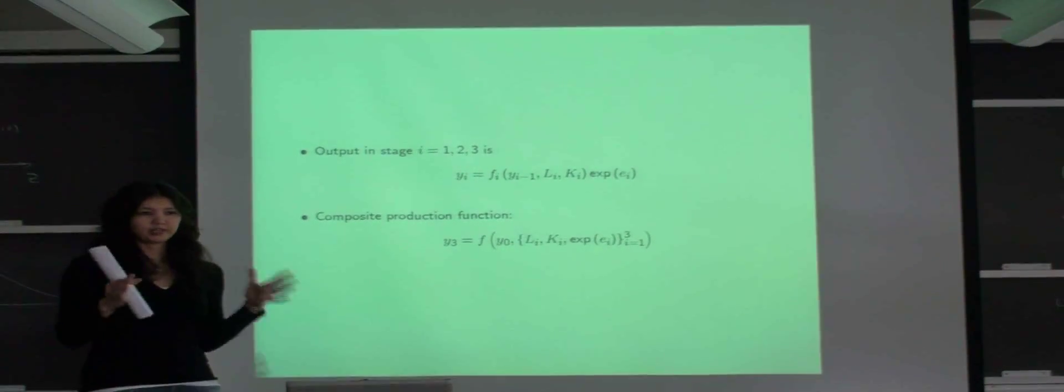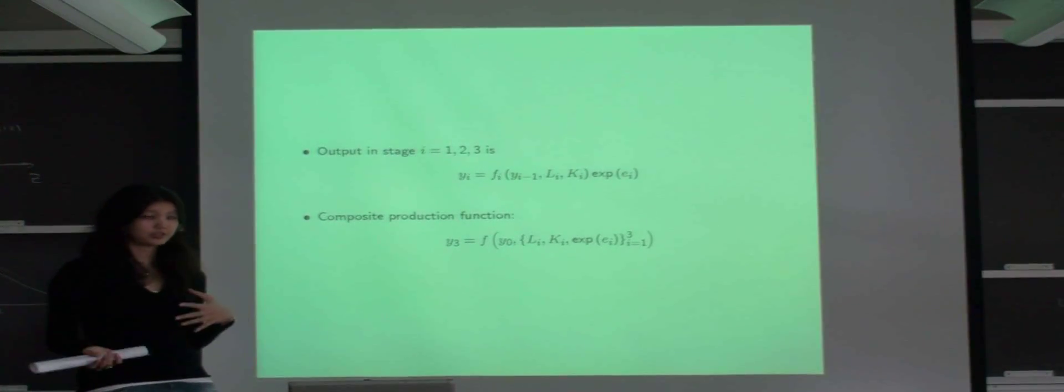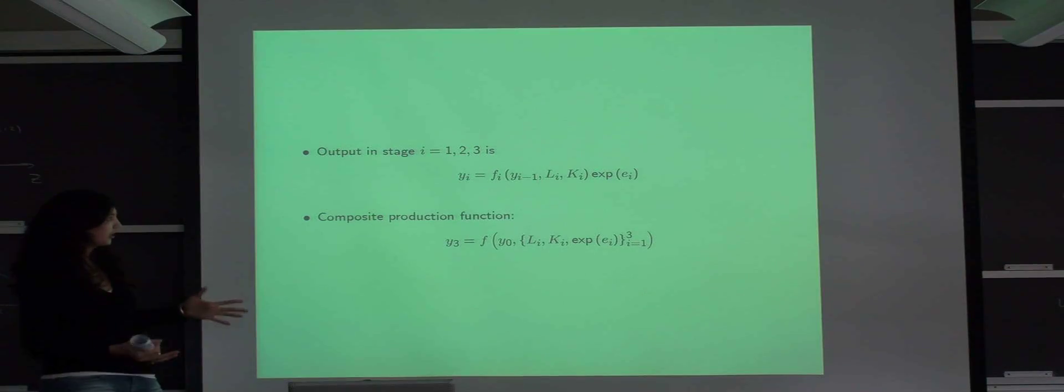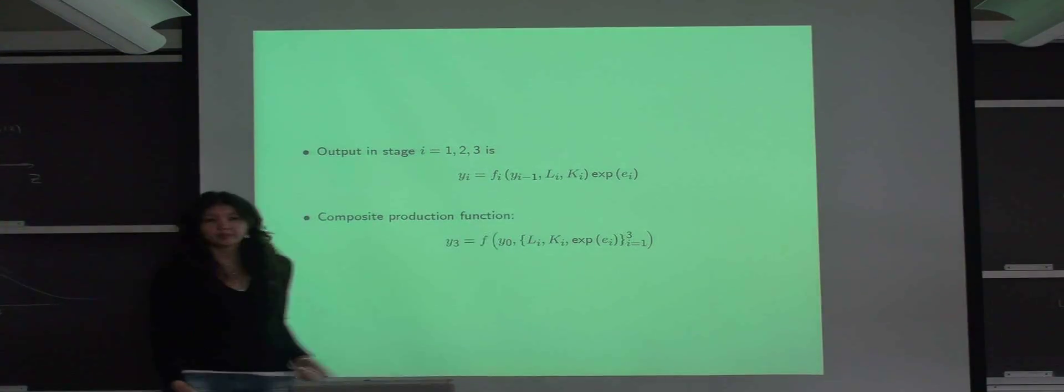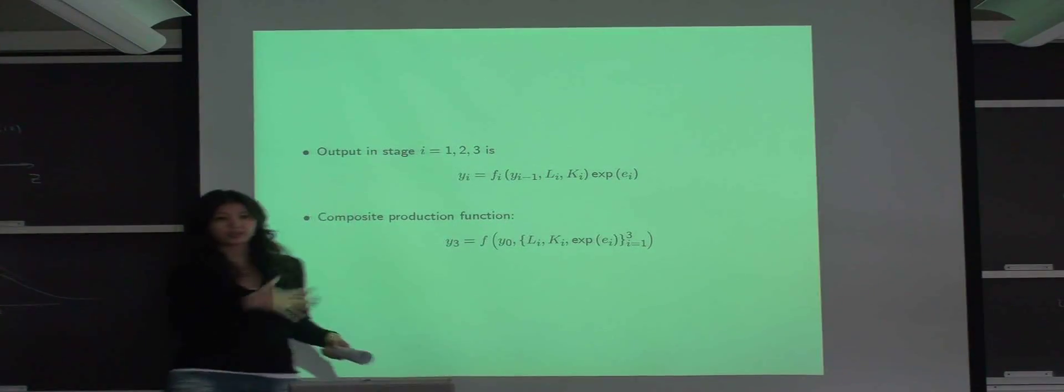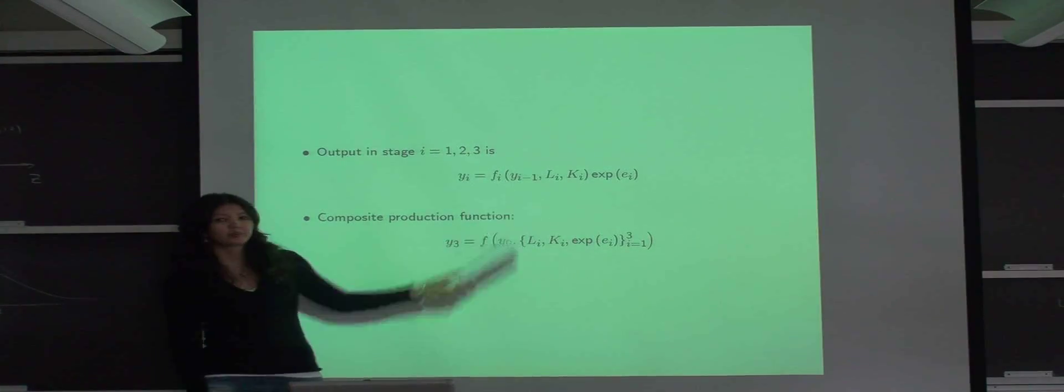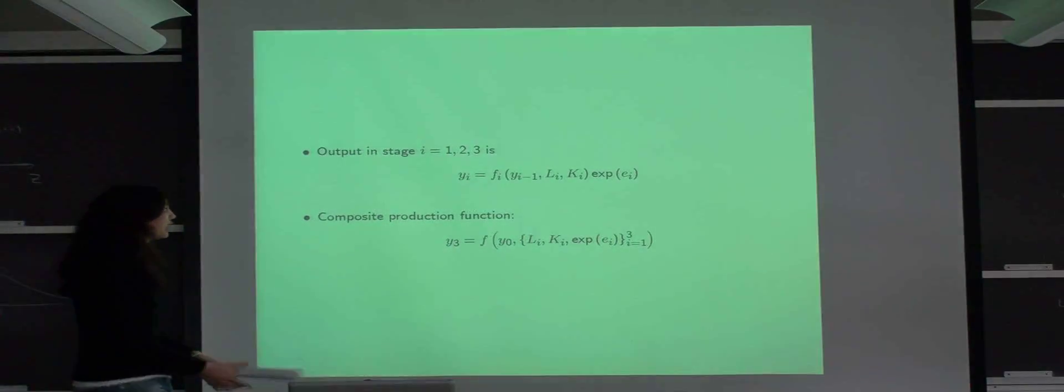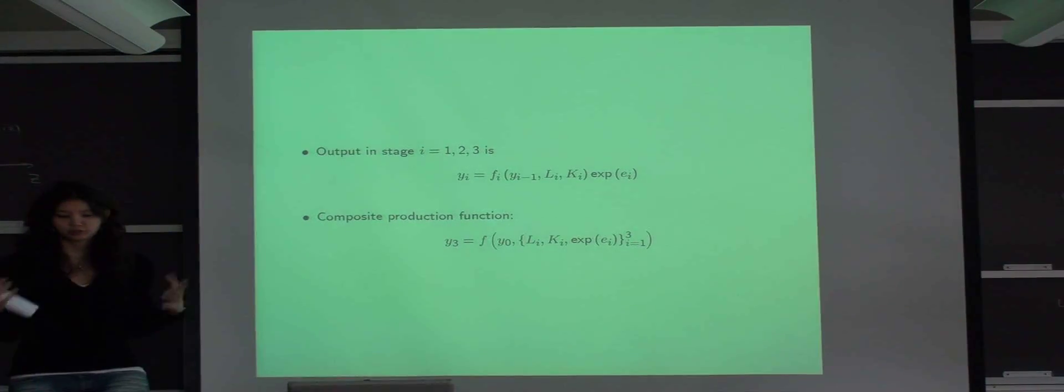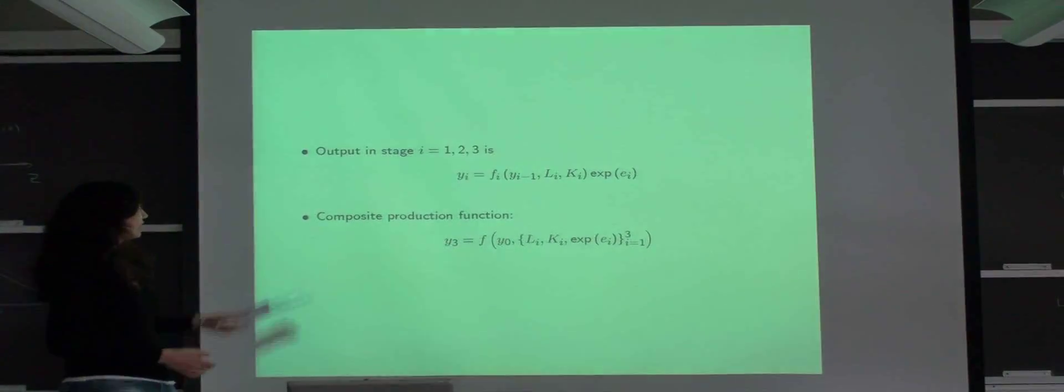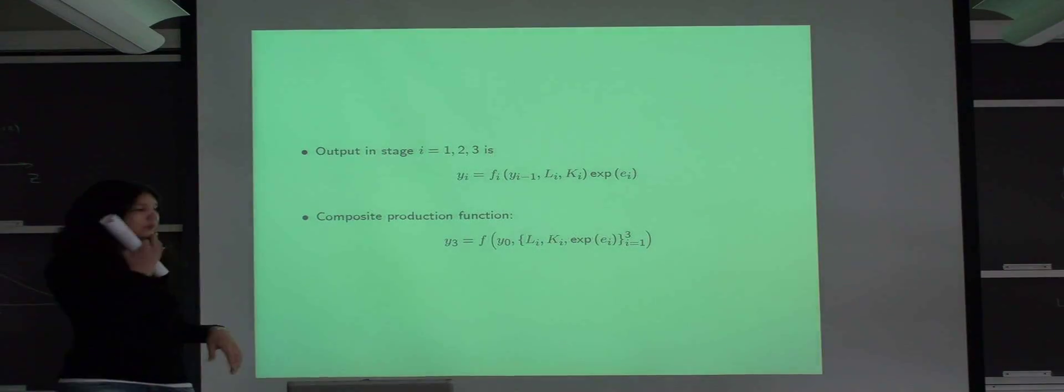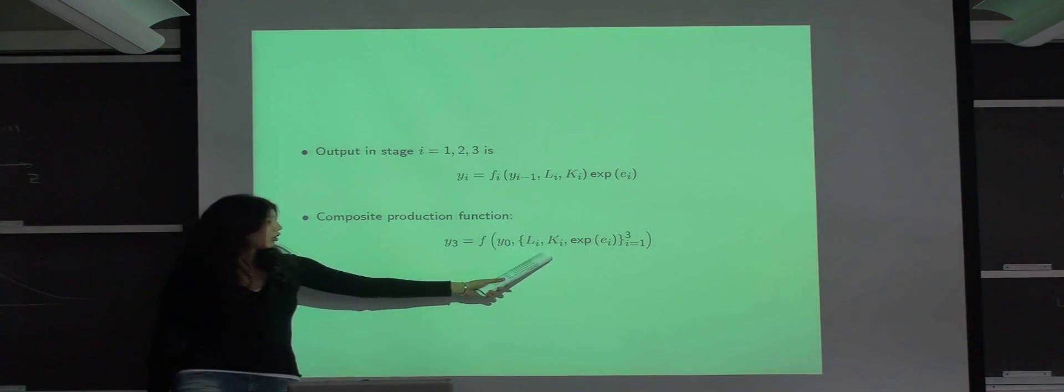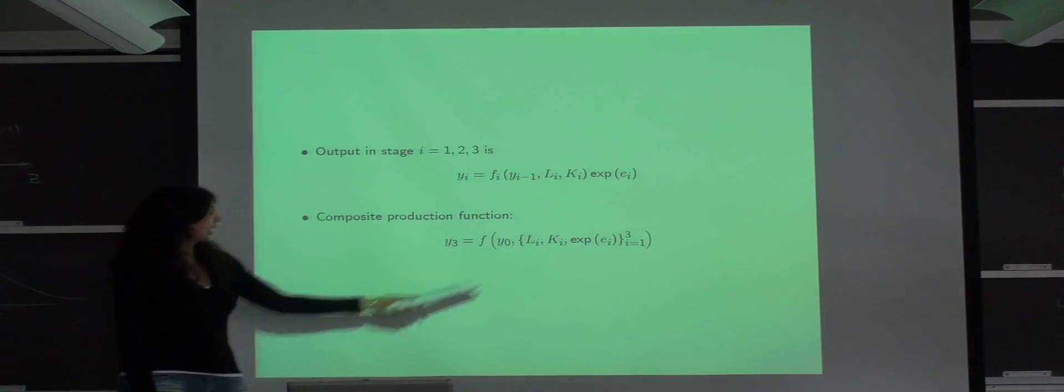For each of these three production stages, you can think of them as a separate production sub-process with its own production function. And the inputs into that stage-specific production function are labor and non-labor inputs used in that stage, production shocks that will be realized during that stage, and also intermediate output from the previous stage, which measures the progress of rice growth. And for stage one, Y zero will be initial conditions such as soil quality and plot characteristics. And then if we substitute in recursions for intermediate output levels, we'll get a composite production function which describes final yields as a function of inputs and shocks throughout all three production stages and initial conditions.